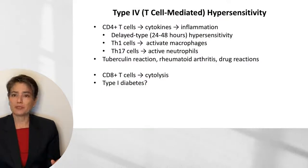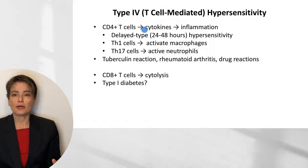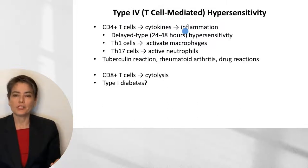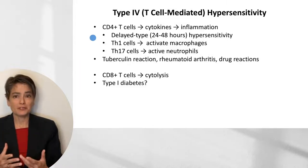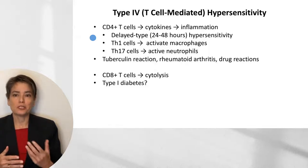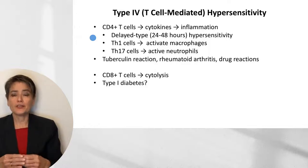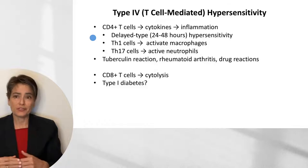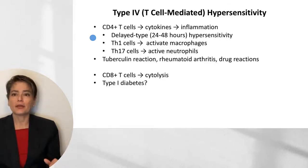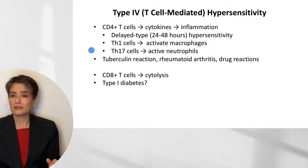This brings us to our final type: type 4, or T-cell-mediated hypersensitivity. The primary cell type is CD4-positive T-cells, with a minor contribution from CD8-positive T-cells. CD4-positive T-cells elaborate cytokines that lead to inflammation. This is also referred to as delayed-type hypersensitivity because it tends to occur 24 to 48 hours after exposure to the antigen. The way to remember this is the tuberculosis test — our PPD, purified protein derivative. An antigen is injected under the skin, and after 24 to 48 hours, induration indicates delayed-type sensitivity, with Th1 cells activating macrophages and Th17 cells activating neutrophils.